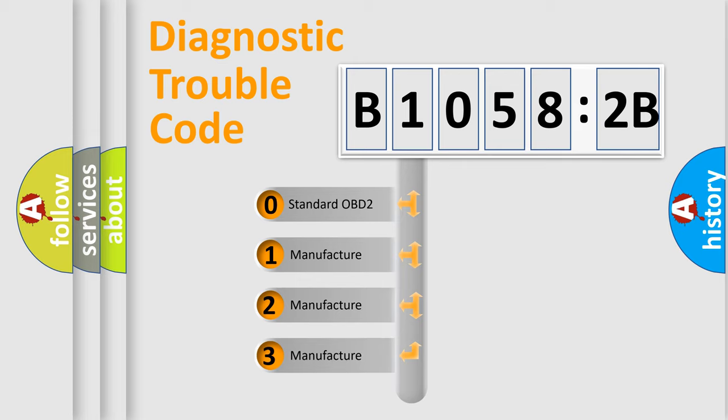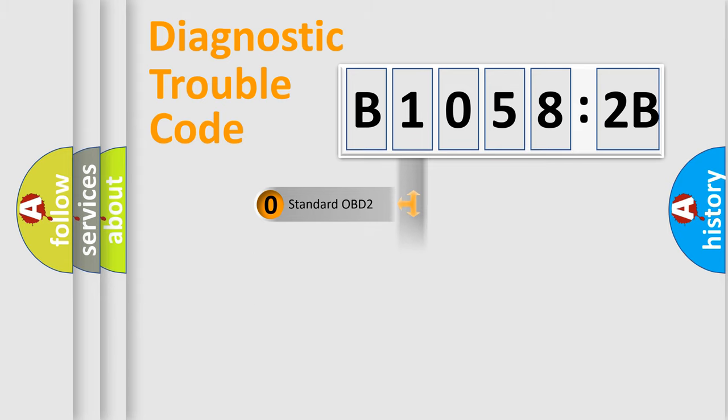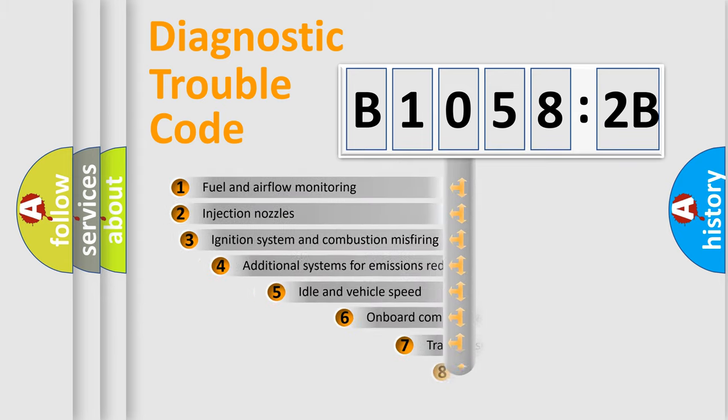If the second character is expressed as zero, it is a standardized error. In the case of numbers 1, 2, 3, it is a more prestigious expression of the car-specific error.